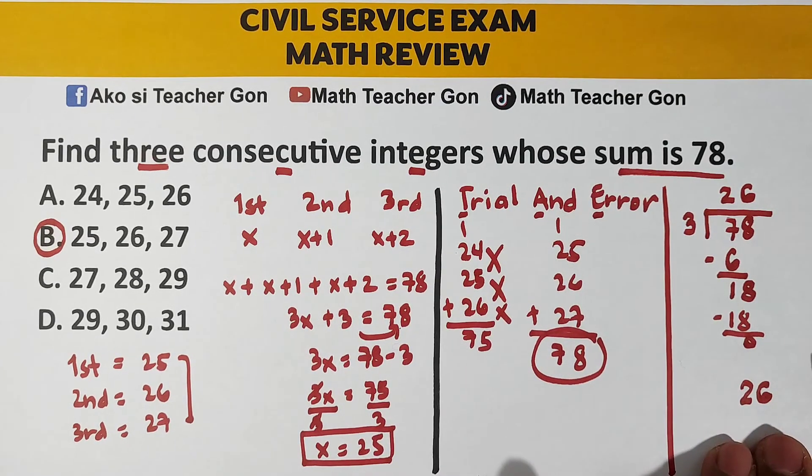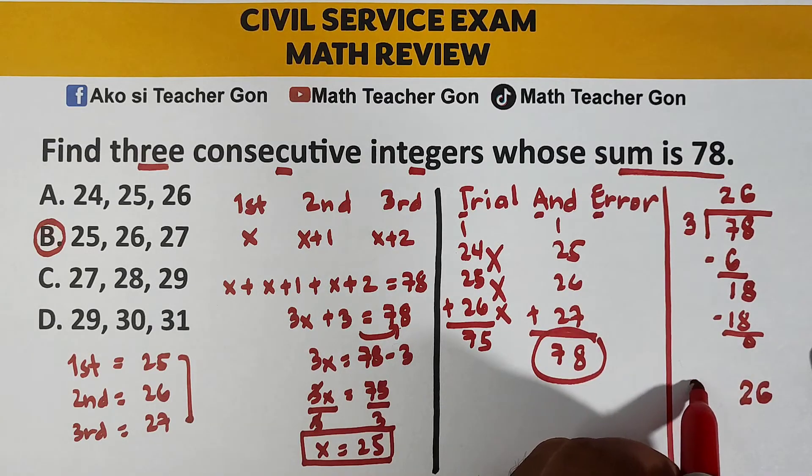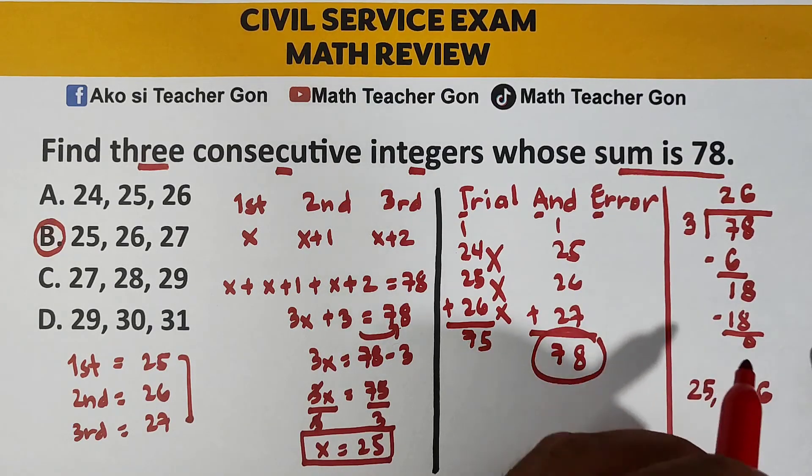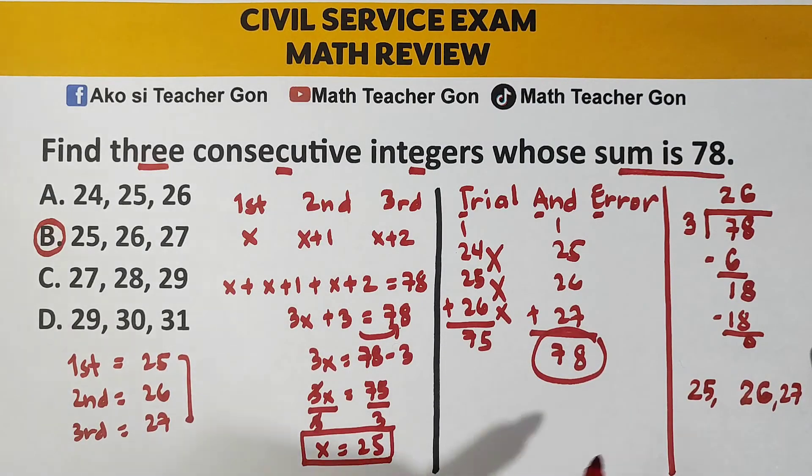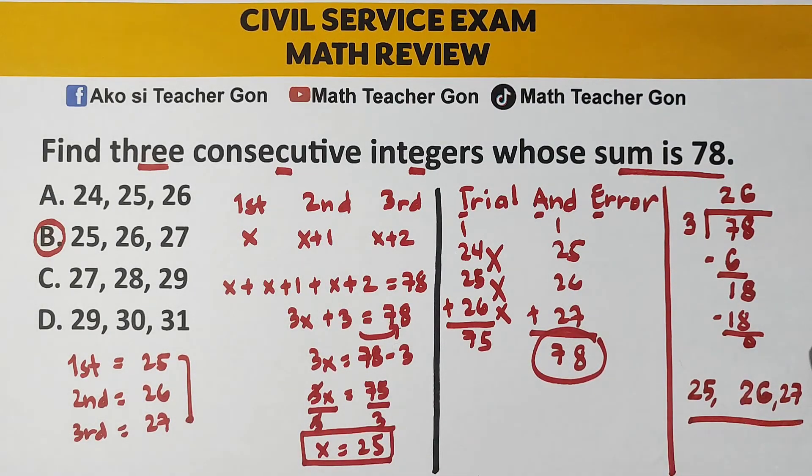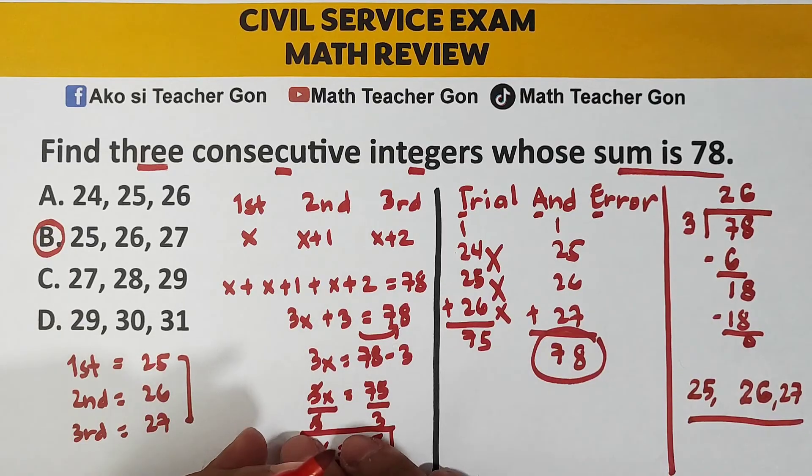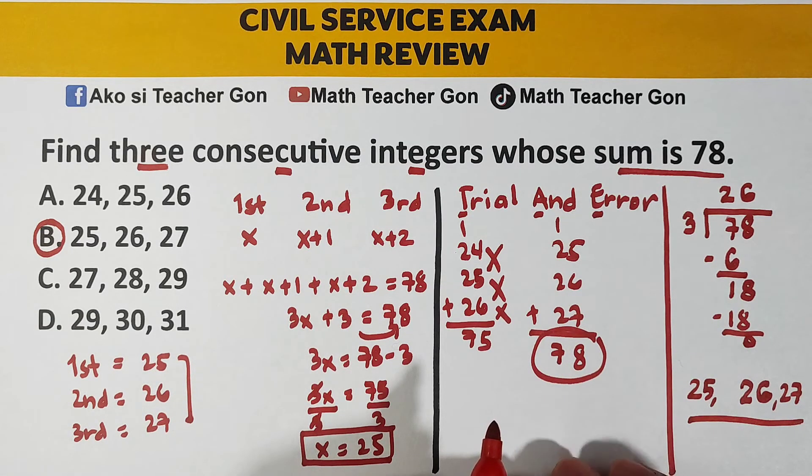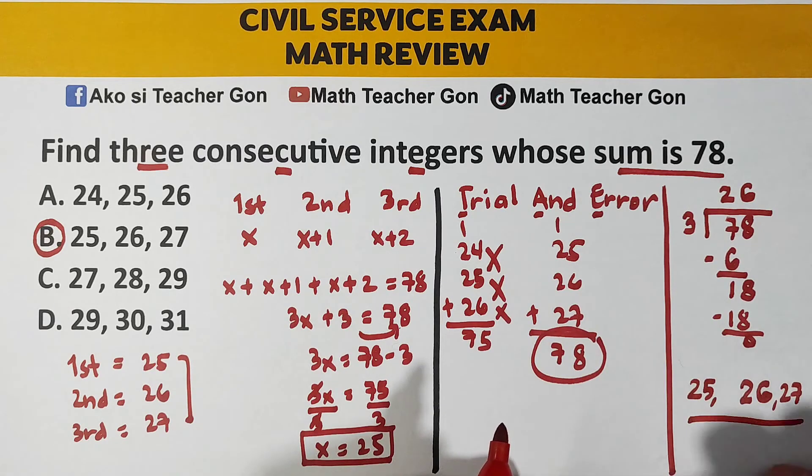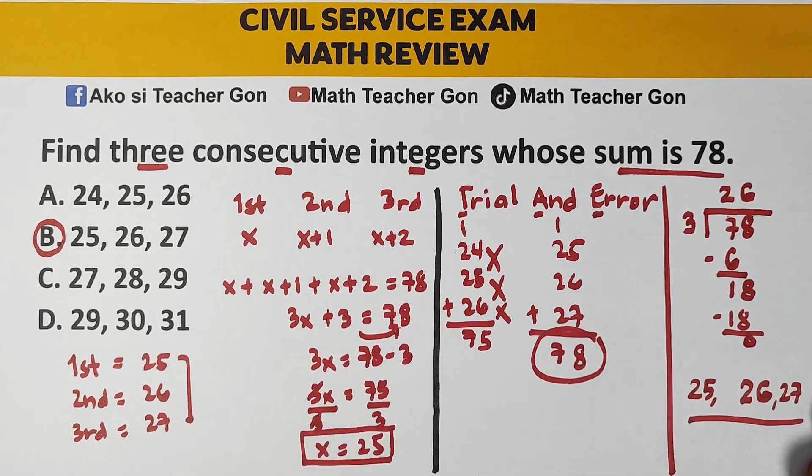So, magbawas tayo ng isa. Meaning, this is 25. Yung first integer natin is 25. And this is 27. As you can see, using the 3 different methods: the algebraic, this one yung trial and error or TAE, and we have here 25, 26, and 27 using the averaging of the integers.